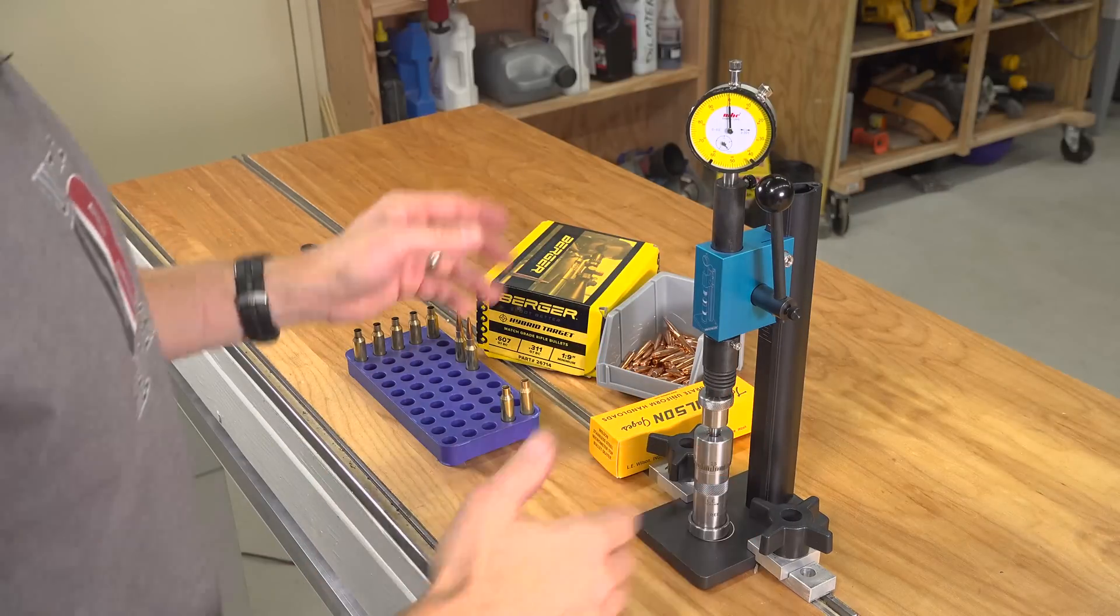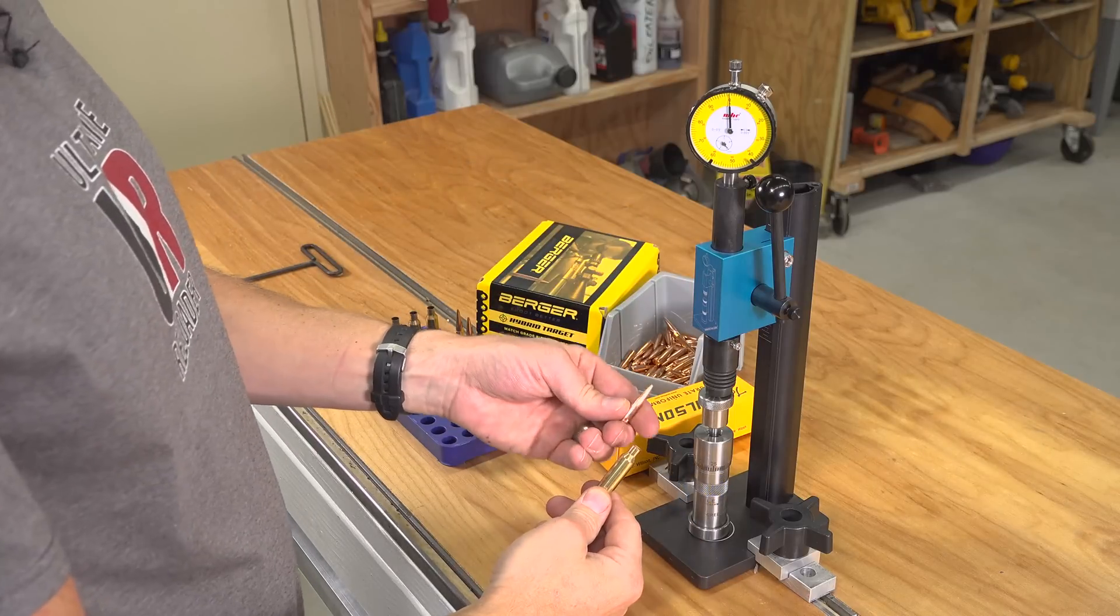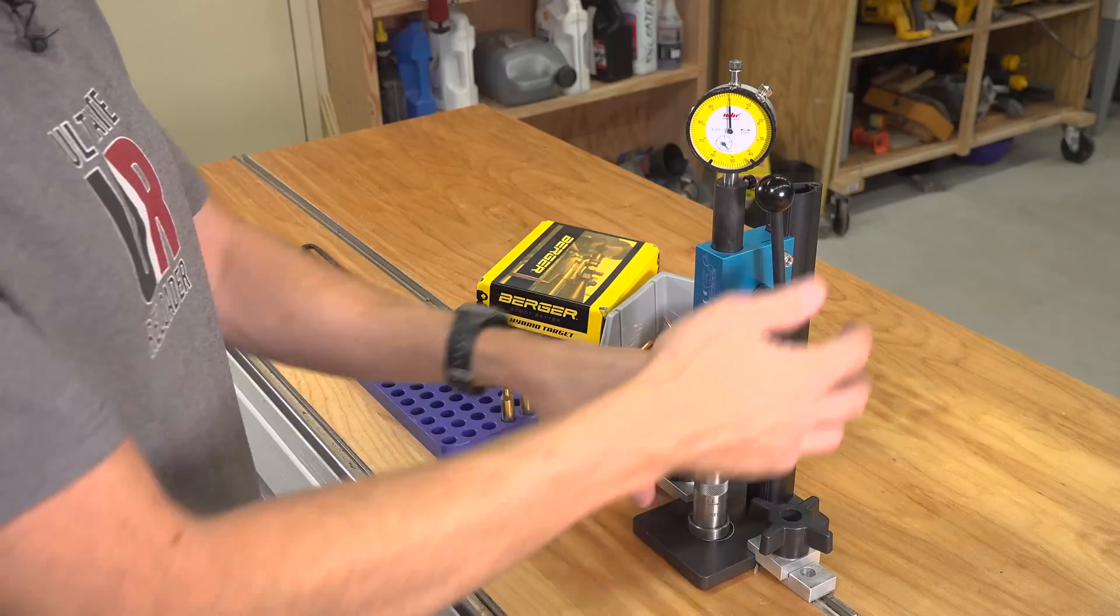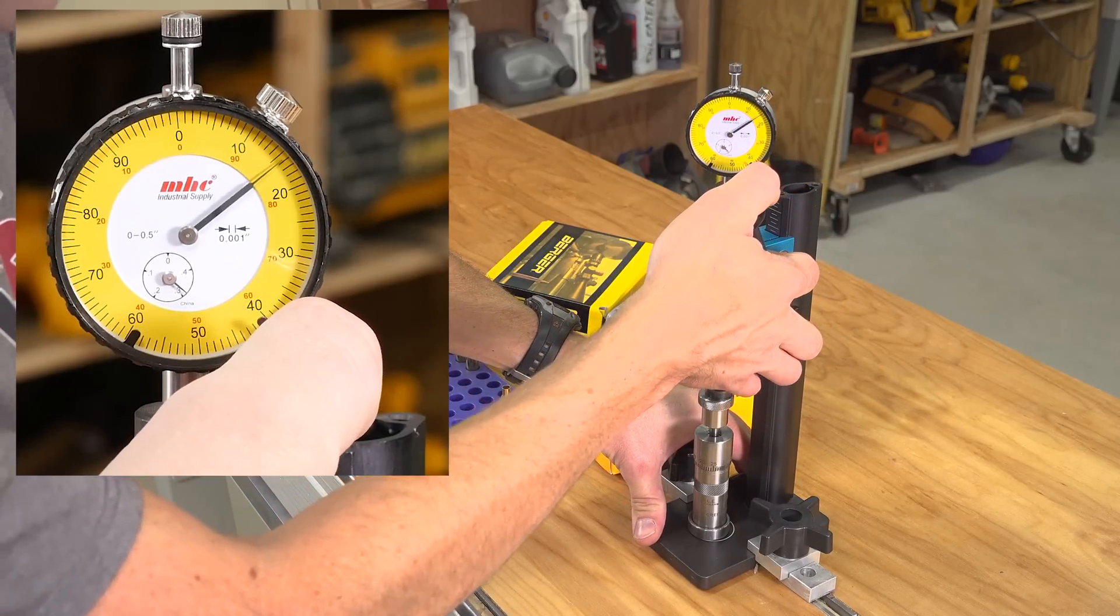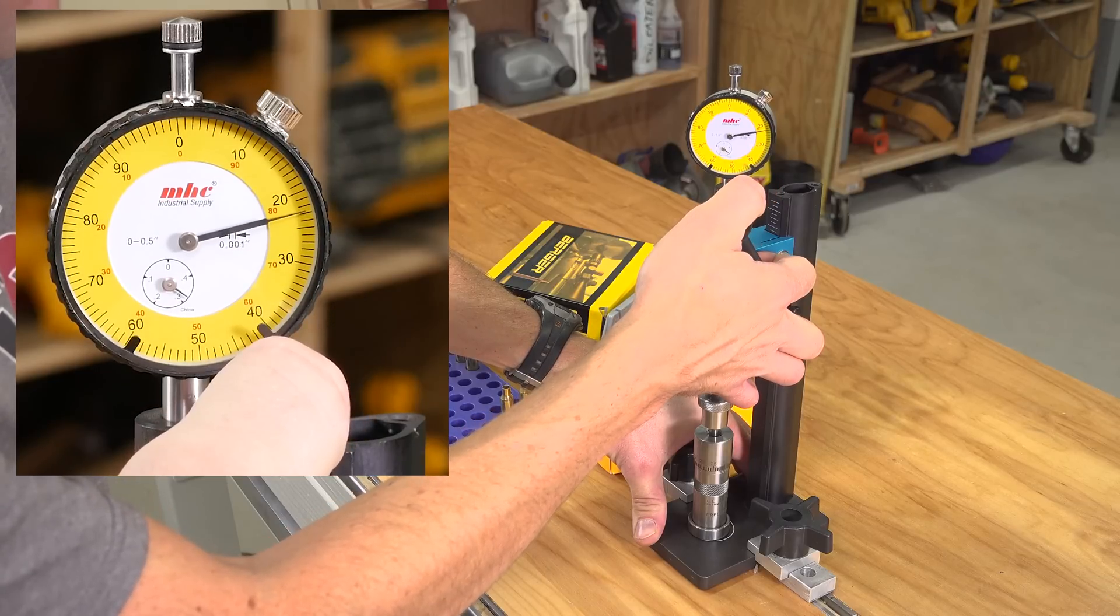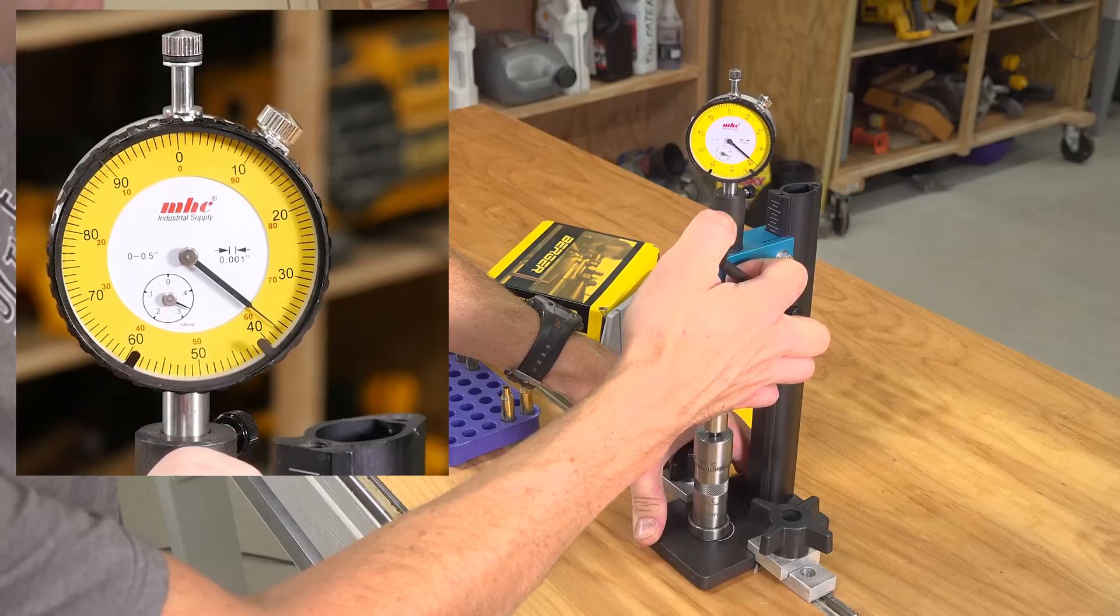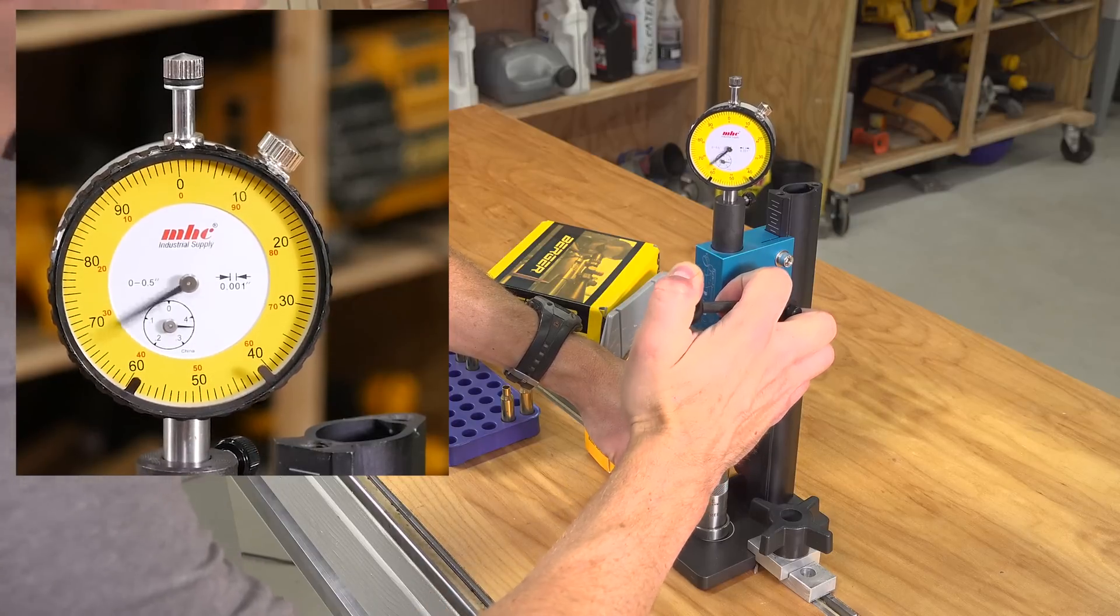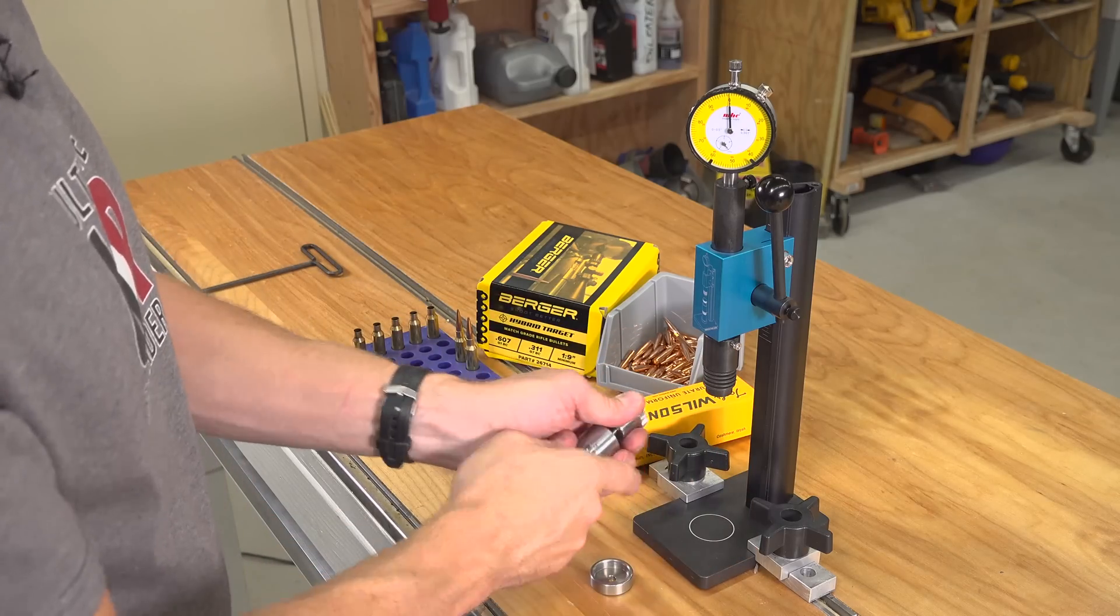What I've got here is Starline brand new 6.5 Creedmoor brass and Berger hybrid target bullets. These are 140 grain. Let's go ahead and seat the bullet and see what we observe. The first thing we're looking for is sort of the break free force. It's right there at about 30 pounds. And then as we continue, almost up to 40 there, we're going to see, there we go, there's about 50 pounds.